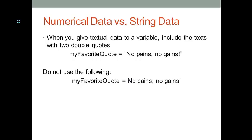When we give a string type of data to a variable, we must include the texts with two double quotes. For instance, in this slide, I created a variable called myFavoriteQuote, and then I give a string type of value, no pains, no gains to this variable. Notice that I include no pains, no gains with two double quotes. Then this statement is considered a correct statement in Python.